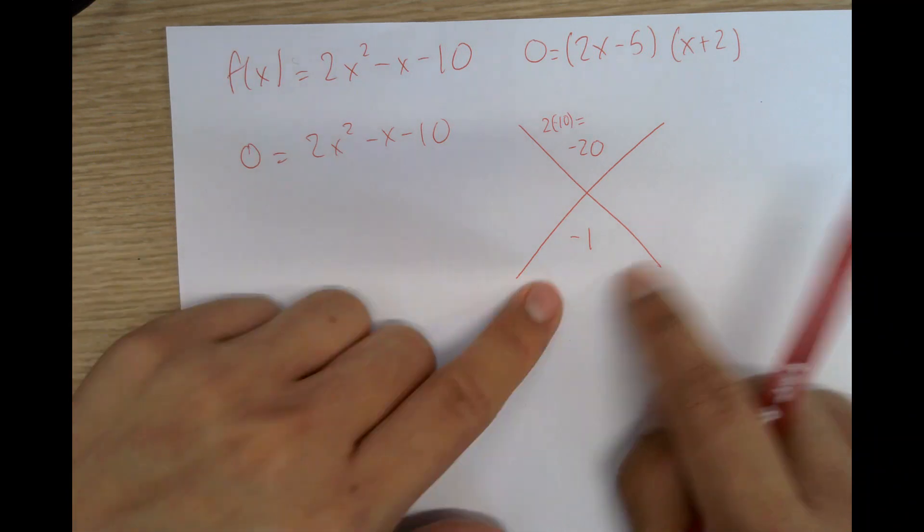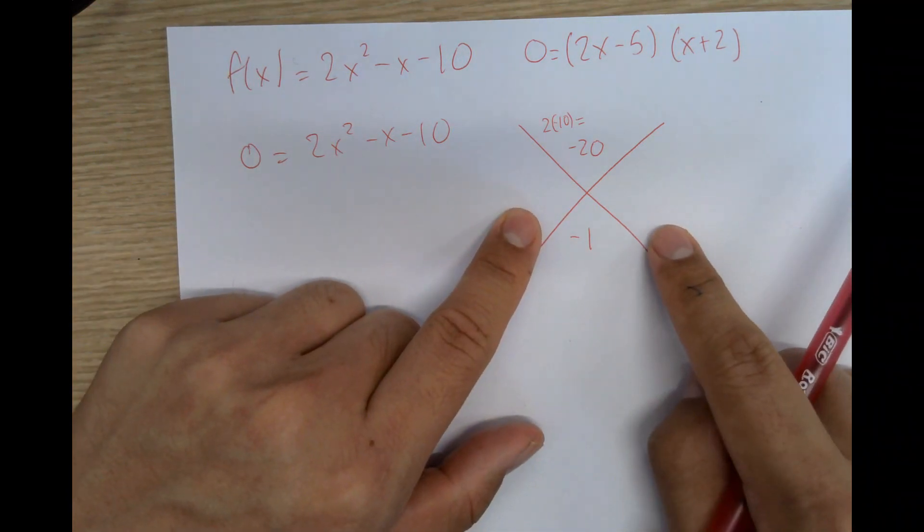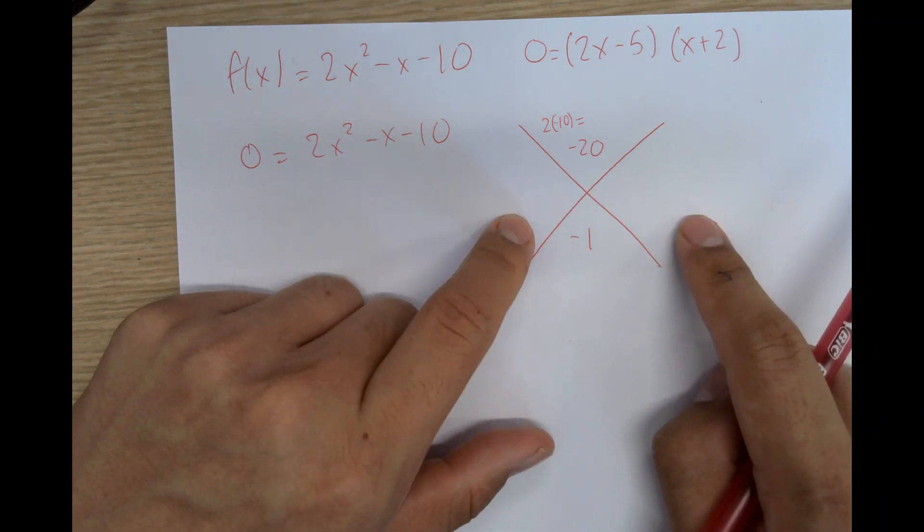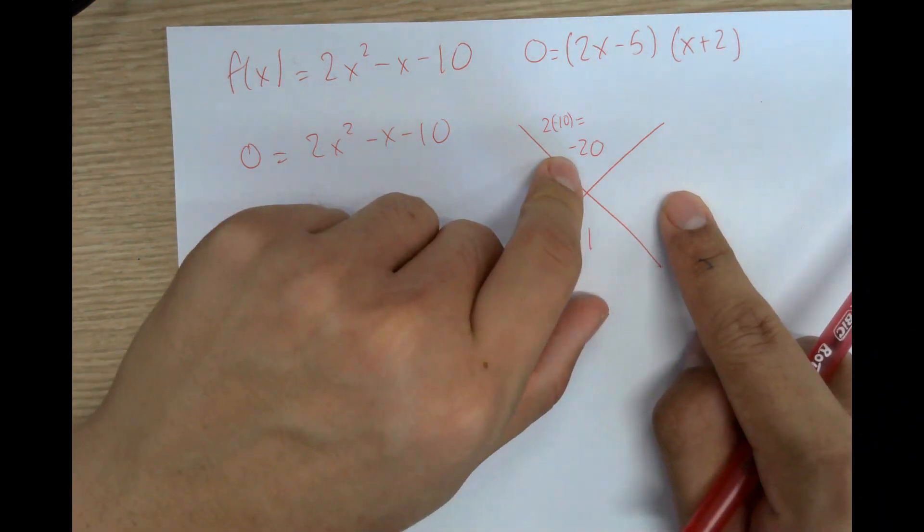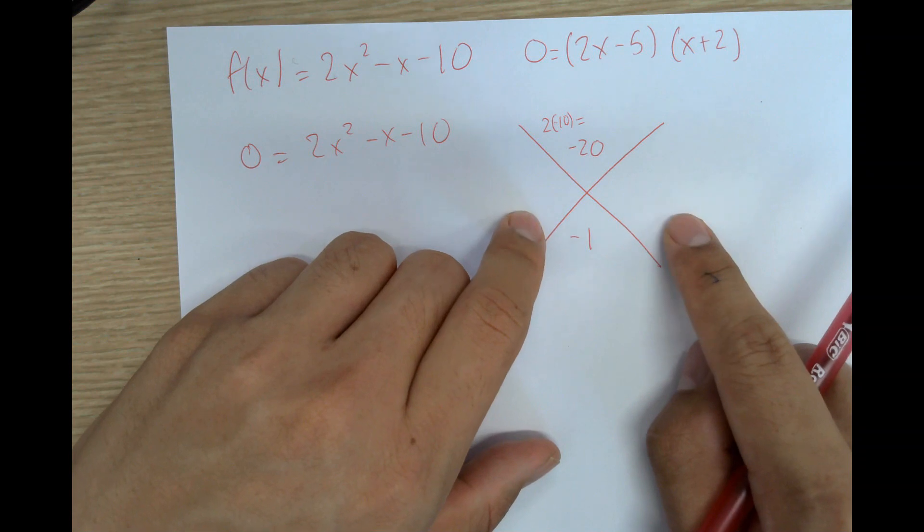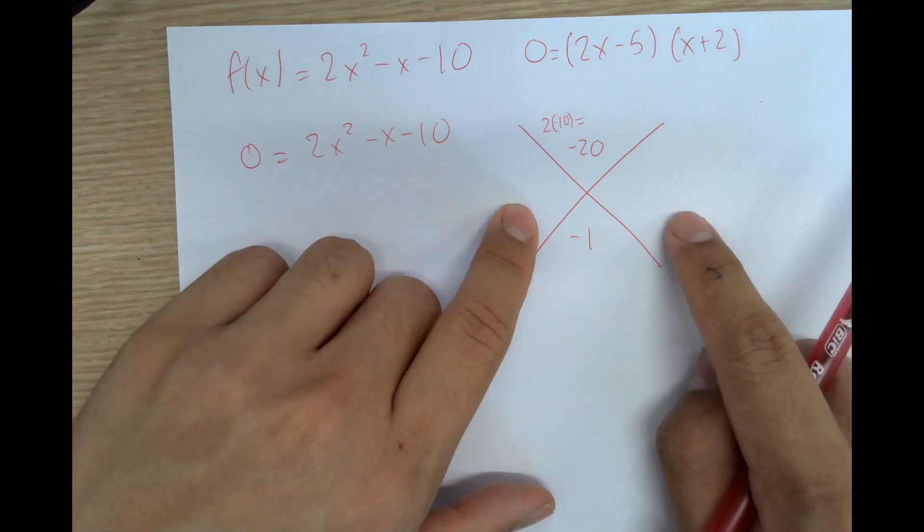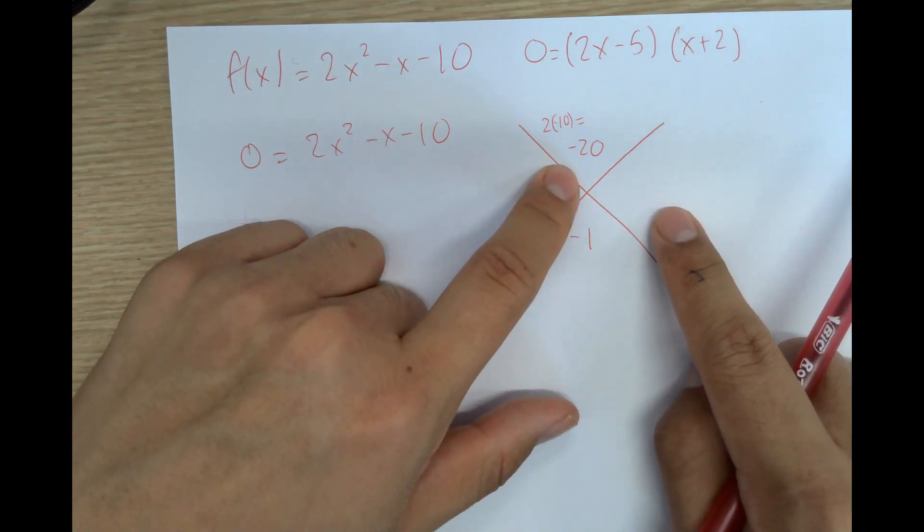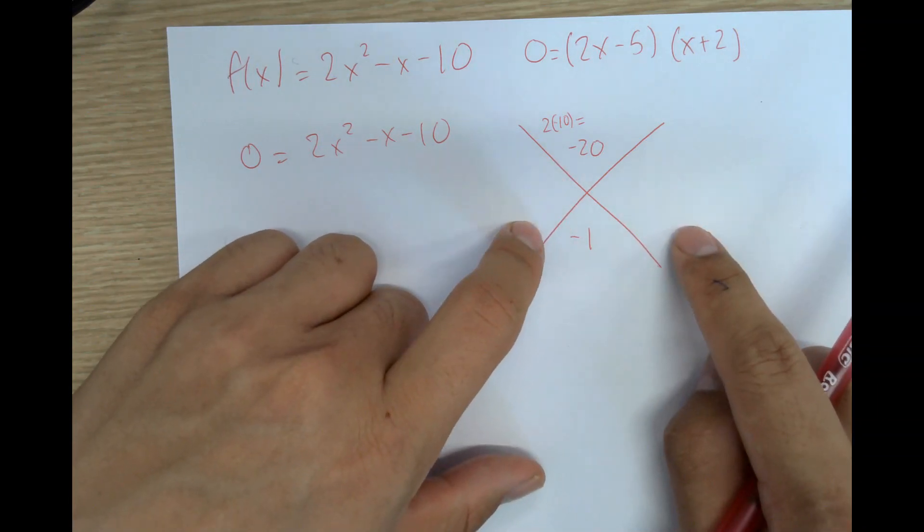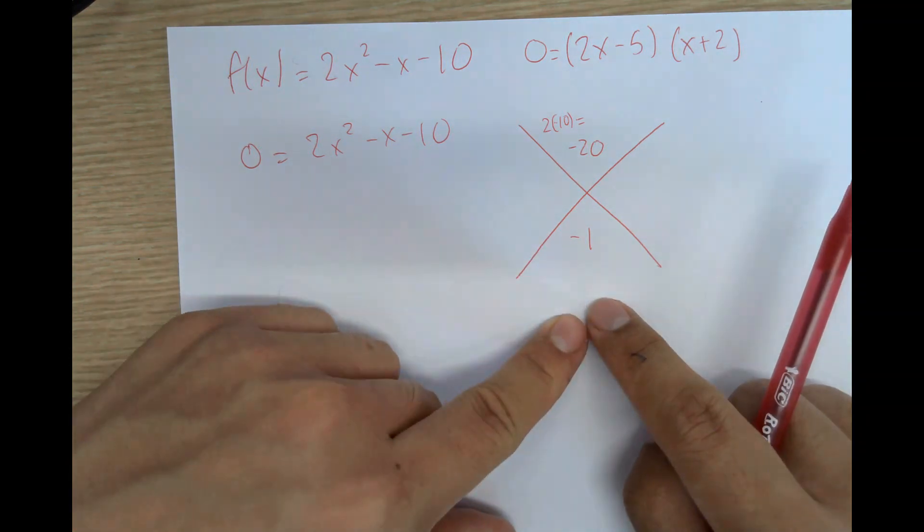So now we're going to do the same thing as before. We're going to find two numbers when multiplied equals -20, but when added together equals -1. So think about which numbers when multiplied equals -20, but when added together equals -1.